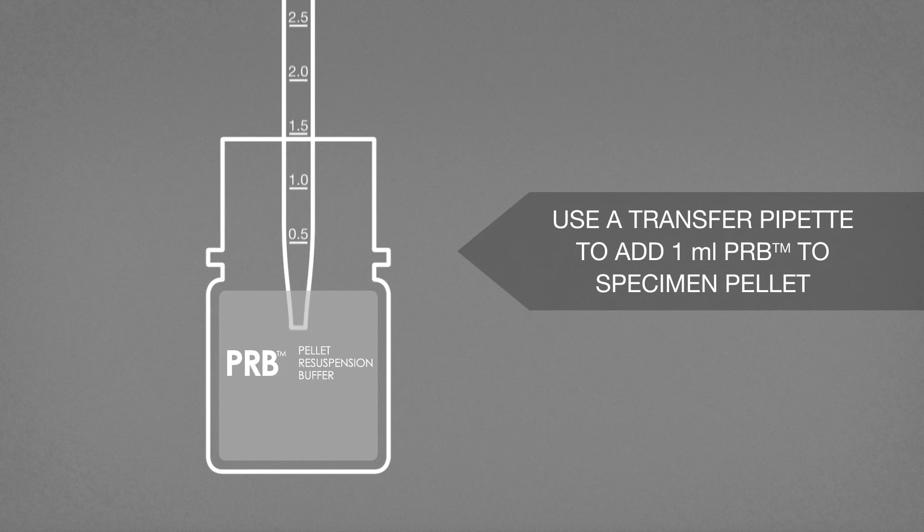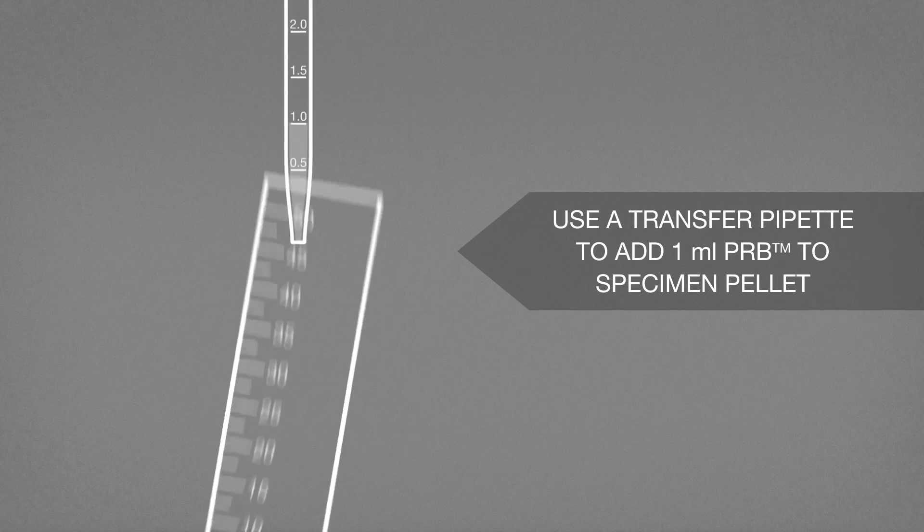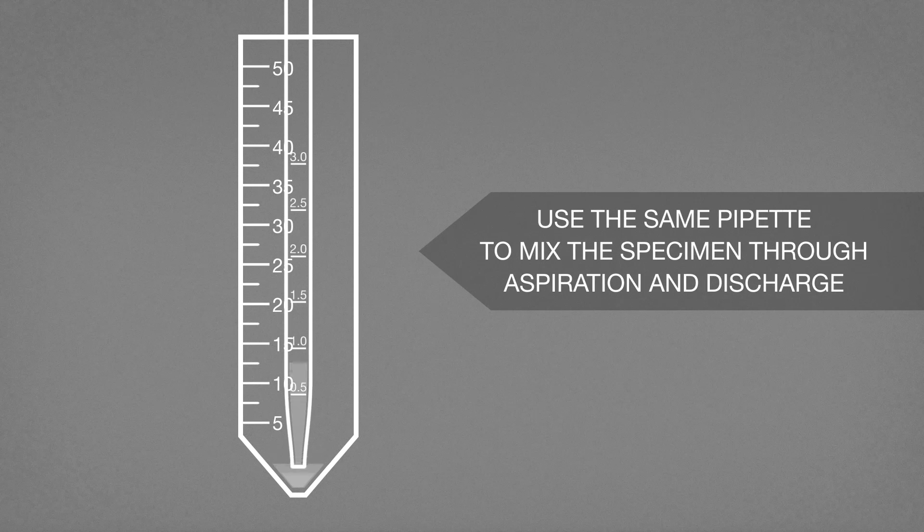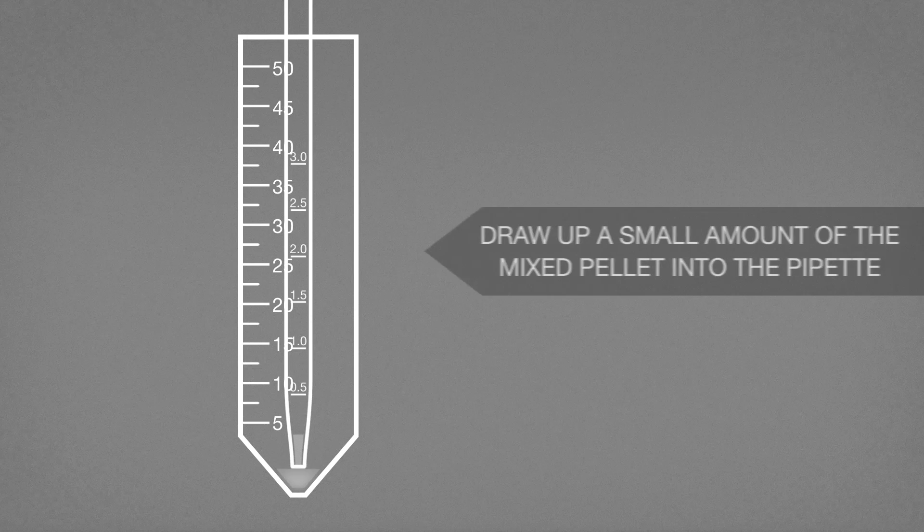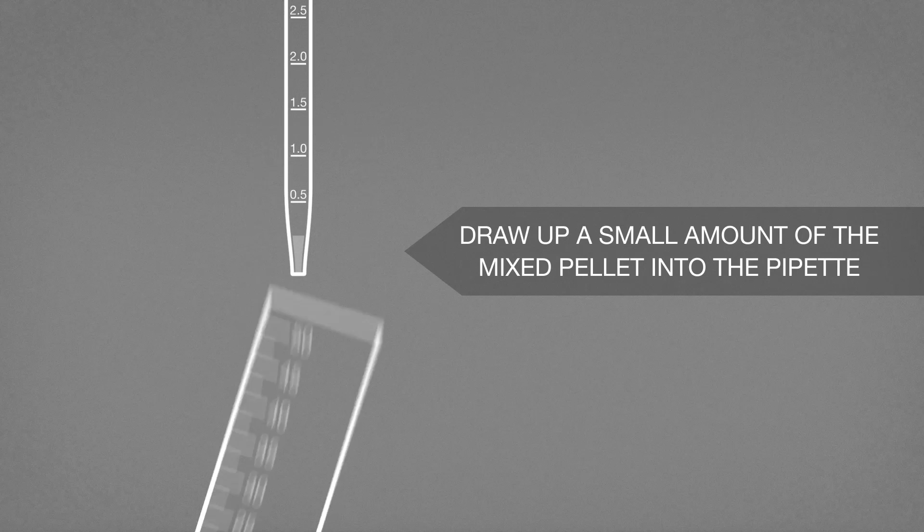Using a transfer pipette, aspirate 1 ml of PRB and add to the specimen pellet. Using the same pipette, carefully mix the specimen through gentle aspiration and discharge. Draw up a small amount of the mixed pellet into the pipette.